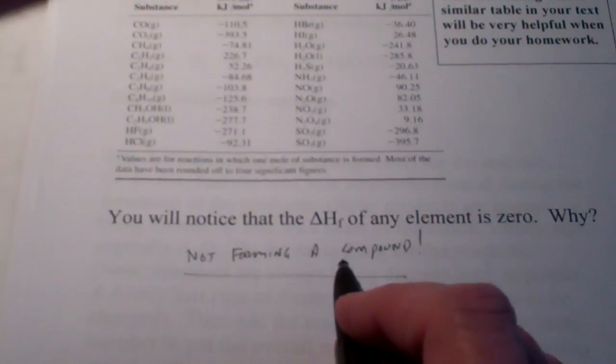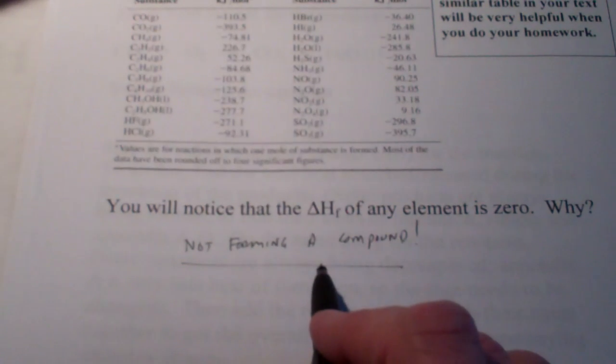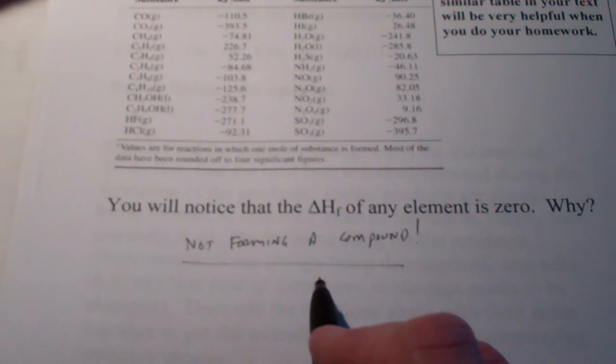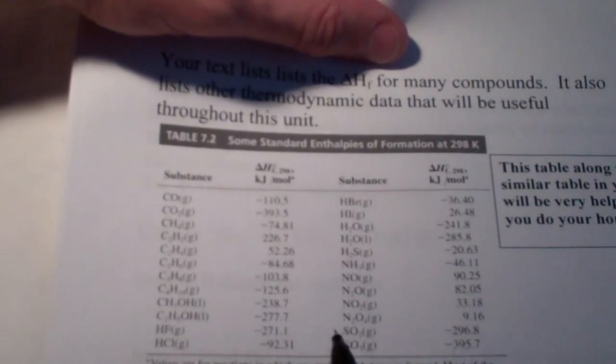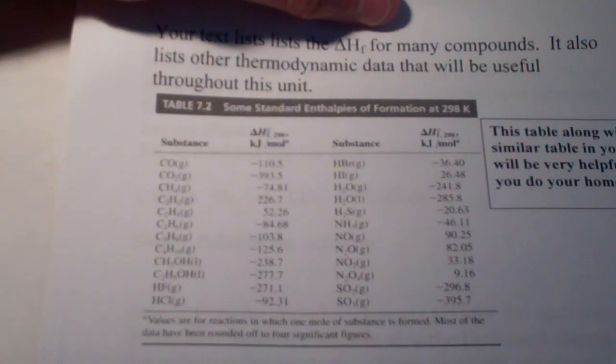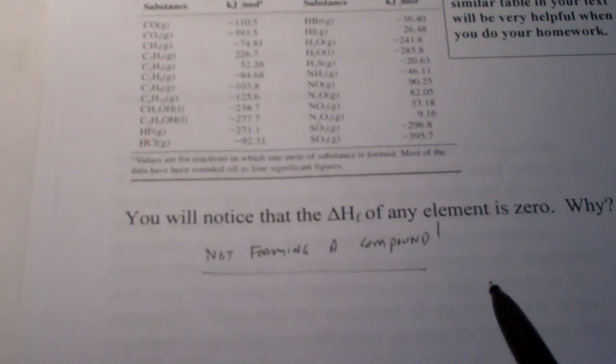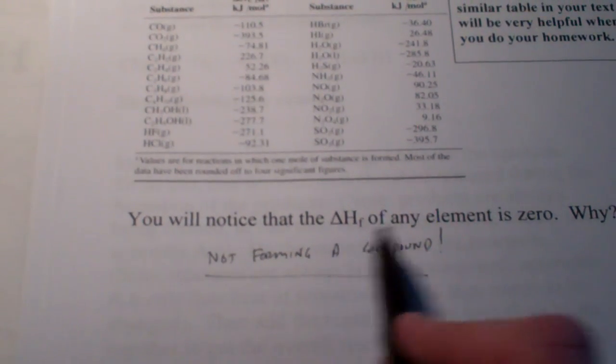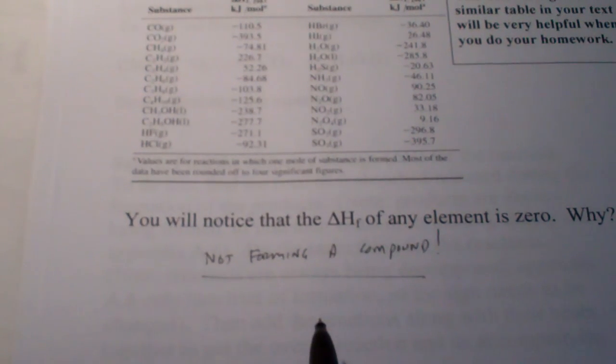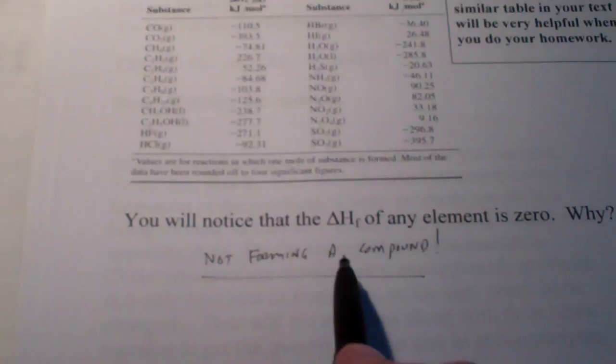All right. The heat of formation of an element would be zero because, remember, your definition for heat of formation is the formation of one mole of a compound from its elements. So we are not forming a compound. Okay. All you have is an element. The heat of formation of any element will always be zero. Now, sometimes the data tables like this one will omit the heats of formation of an element. You should know that those are zero. Oftentimes, other data tables will include the heat of formation of an element, and they will put zero next to them. So keep that in mind. The heat of formation of any element is zero.